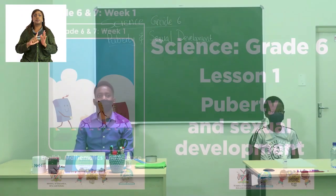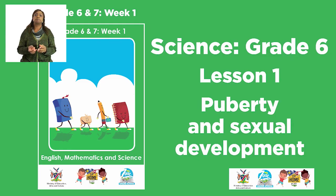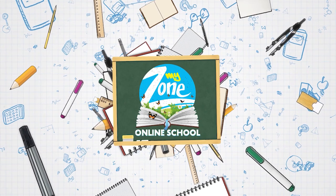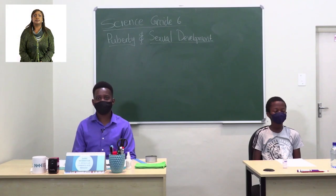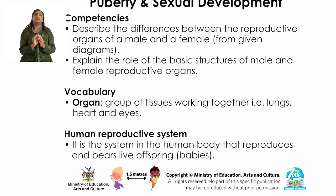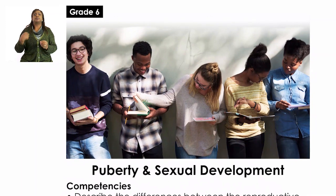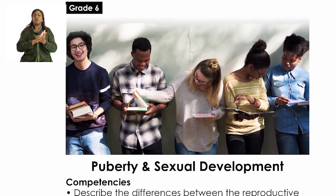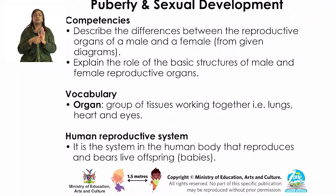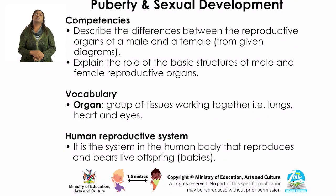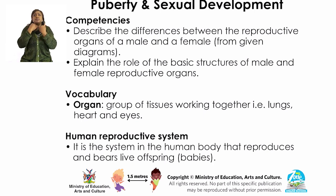Today's lesson is Puberty and Sexual Development. Let us now turn to page 17, where we will look at Puberty and Sexual Development. The basic competencies we will encounter during this lesson: you should be able to describe the differences between the reproductive organs of a male and female from given diagrams, and explain the role of the basic structures of male and female reproductive organs.